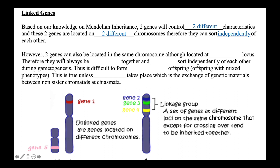However, two genes can also be located on the same chromosome, although at two different loci. For example, genes 2, 3, and 4 are all located on the same chromosome at different loci. Since they are all on the same chromosome, they will always be inherited together and cannot assort independently during gametogenesis. Thus, it is very difficult to form recombinant offspring — that is, offspring with mixed phenotypes.